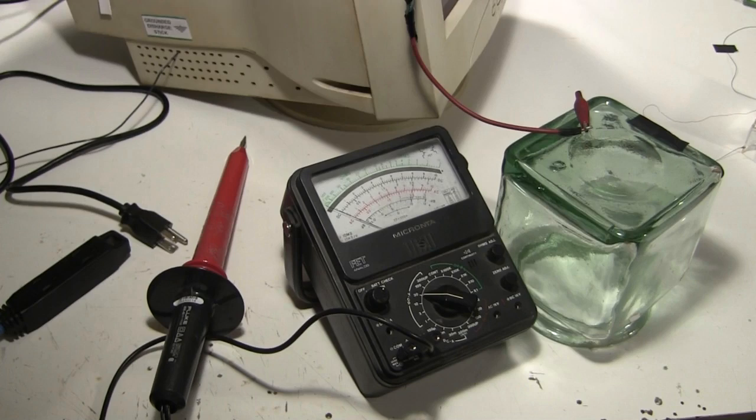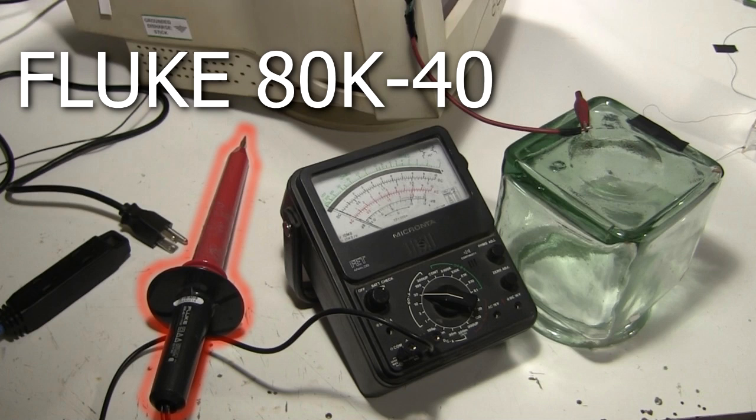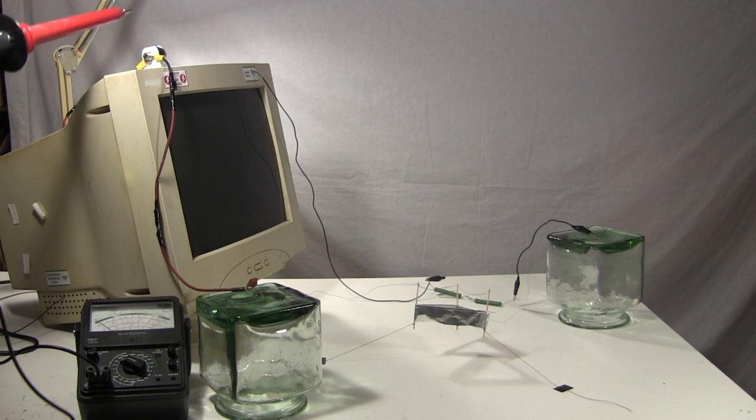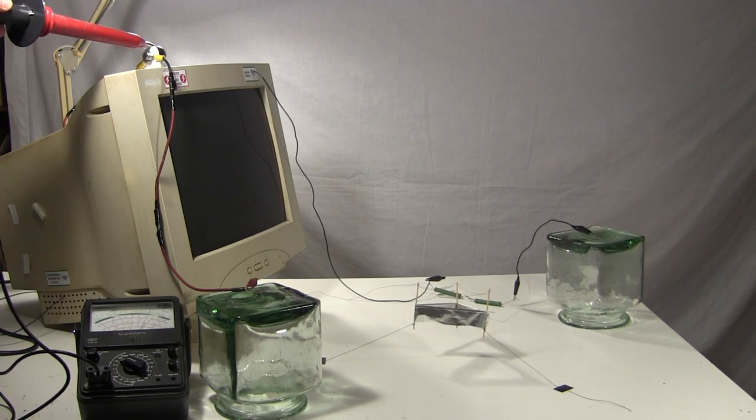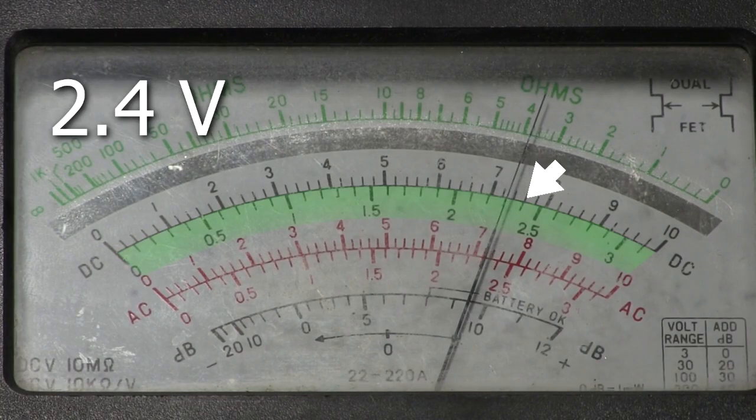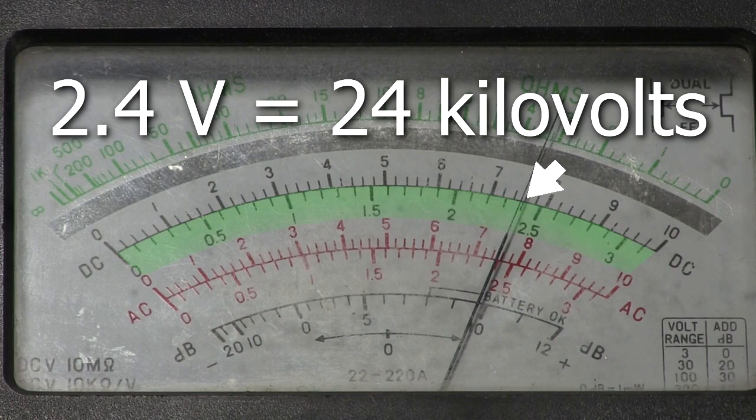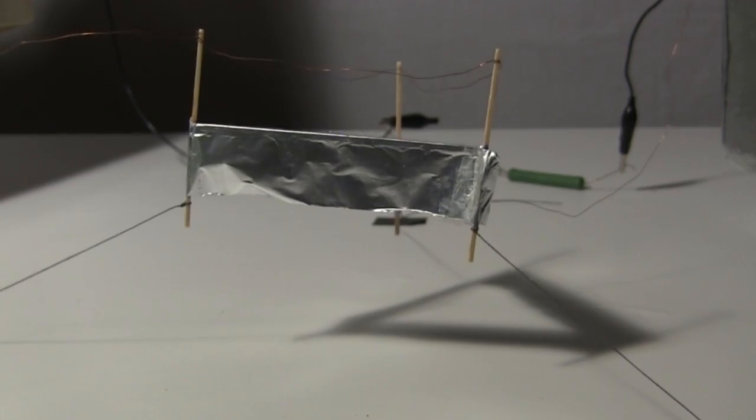I'm curious what the voltage is, so I have my Fluke 80K-40 high voltage probe plugged into my analog meter. Once the lifter is flying, I touch the ball with the probe tip. The meter shows around 2.4 volts DC, which is really 24 kilovolts. And here's the lifter in the dark, so you can see the corona.